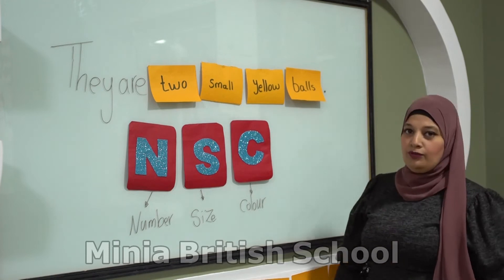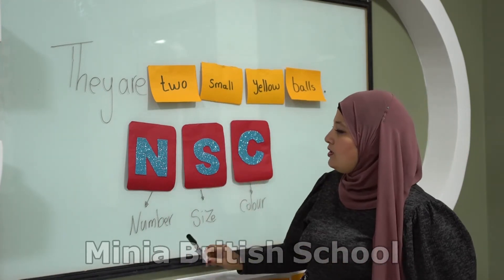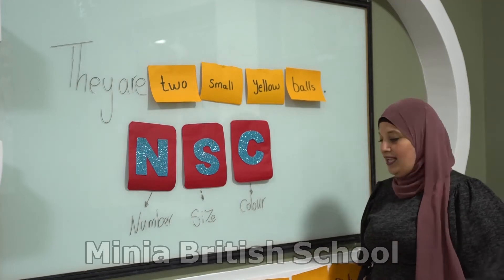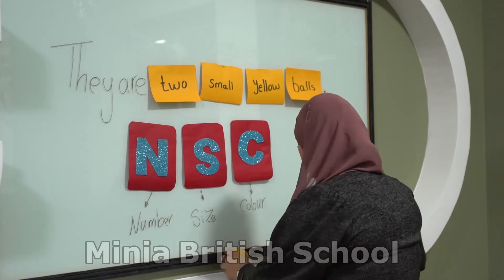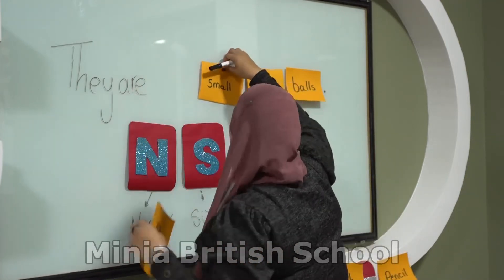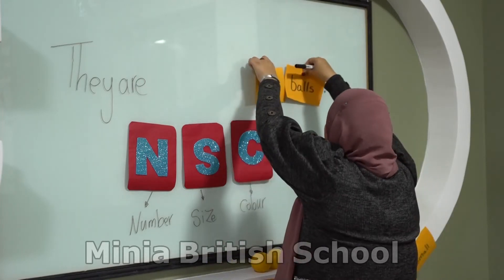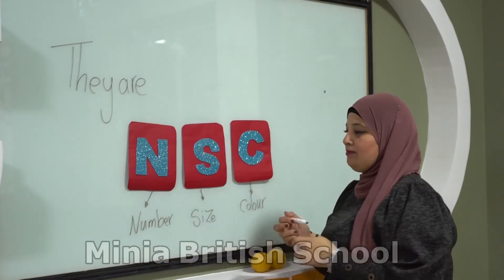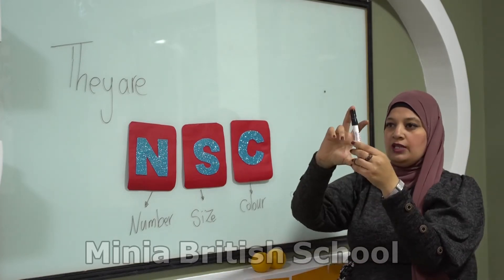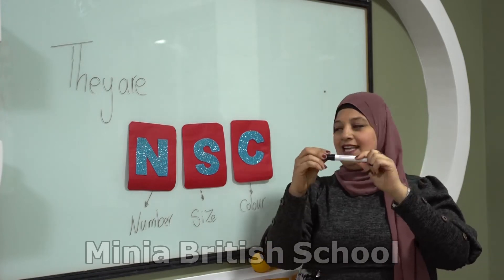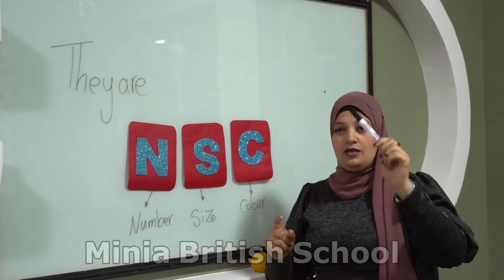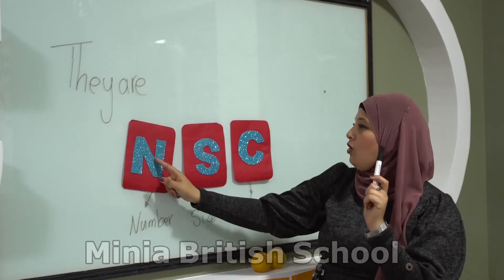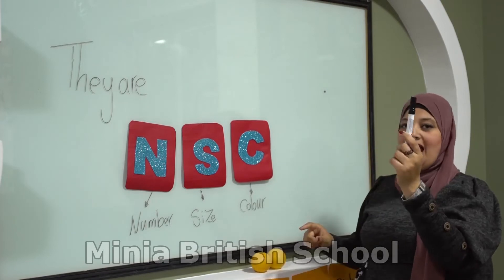At the end, don't forget the punctuation — the full stop. So let's remember the magic letters: N, S, C — Number, Size, Color. Now, for example, this pen. The color is black. It's one — it's singular. Can I say 'it is black one pen'? No. I have to use Number, Size, Color. So I say: it is one small black pen.